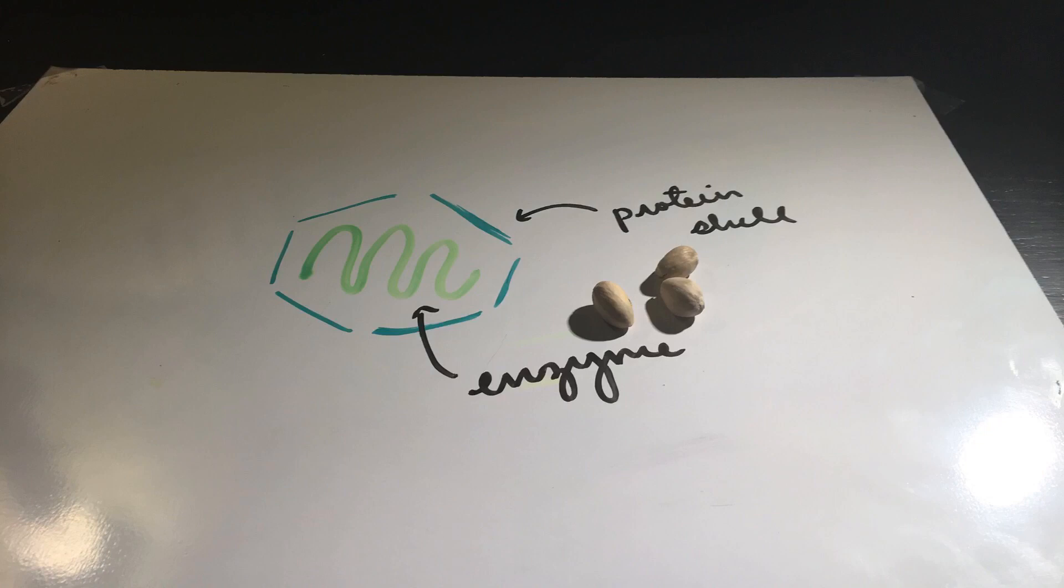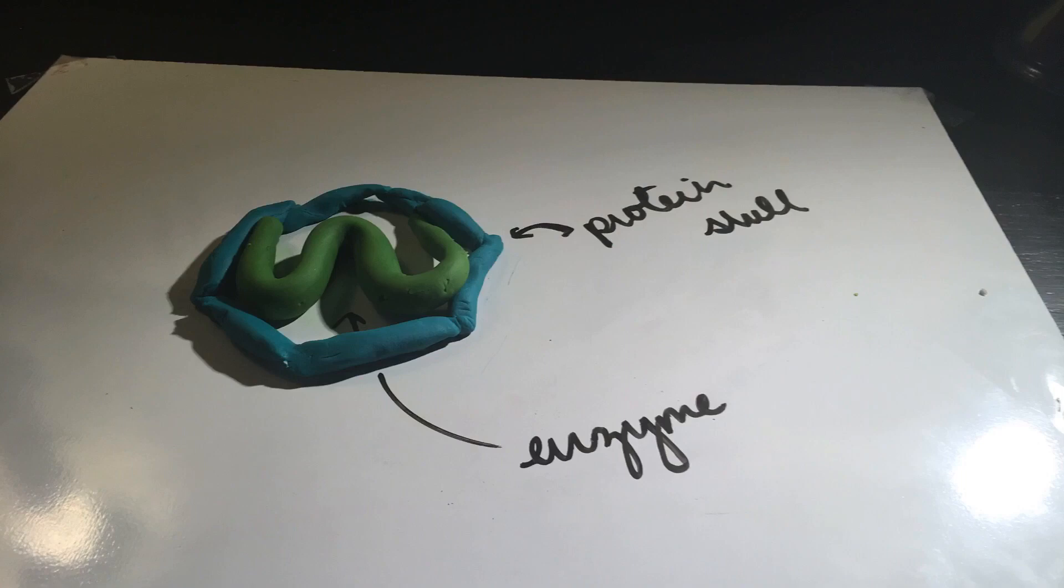The shell is polyhedrally shaped, meaning that each side is a polygon. Specifically, it is an icosahedron. So, not so much a pistachio, more like a 20-sided die that holds an important enzyme.